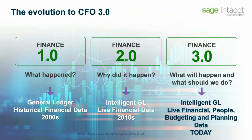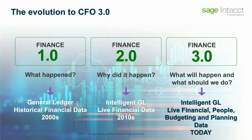At Sage Intact, we partner very closely with our customers to understand what's going on for them — not just how they're using the product, but understanding the role that the finance team and the CFO play within their organization. One of the changes we've been seeing is an evolution — the 1.0, 2.0, 3.0 kind of role. It's really been evolving over the last couple of decades. What we've been seeing is a transition from being focused on a historical point of view, looking at making sure that books were captured and closed accurately, providing an accurate view of what has happened, and being compliant with audit requirements.